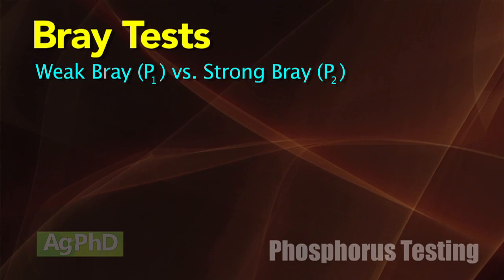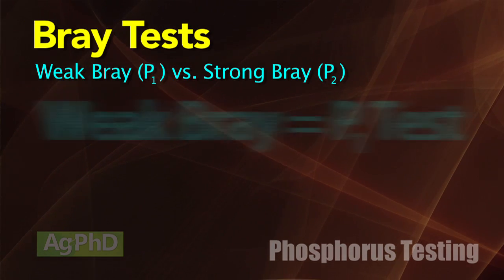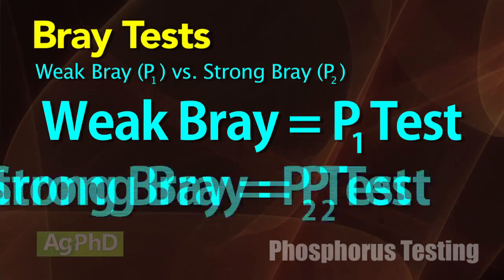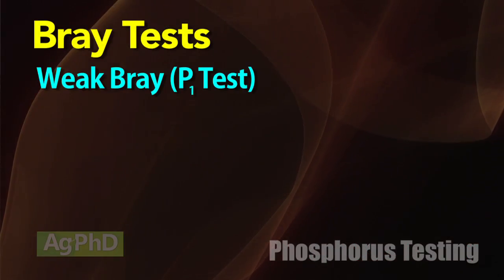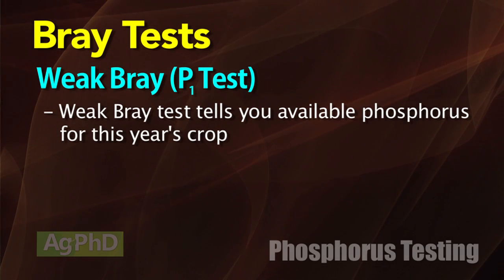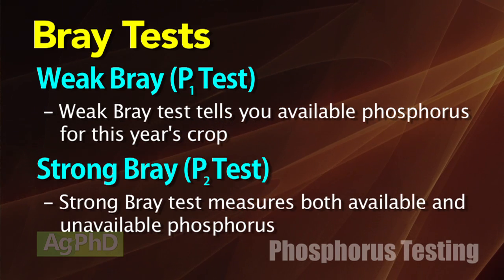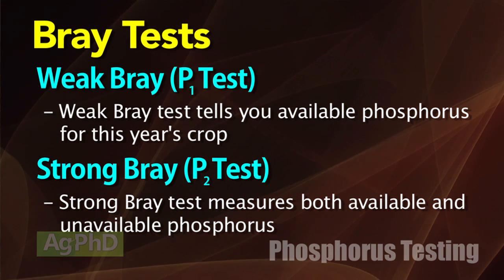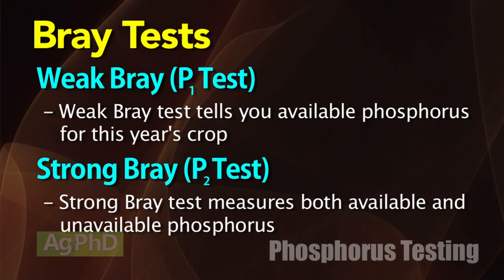With the Bray tests, there are two of them — there's a weak Bray and a strong Bray. The weak Bray is also known as P1 and the strong Bray is known as P2. The P1 test, or weak Bray, will tell us how much phosphorus is available for this year's crop. The P2 is the total phosphorus — both the available and what's left in reserve in the soil that's not available for this year's crop.